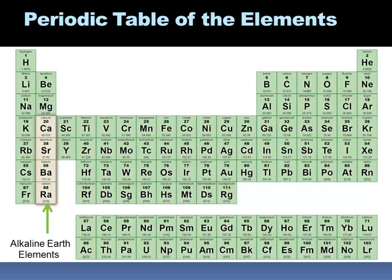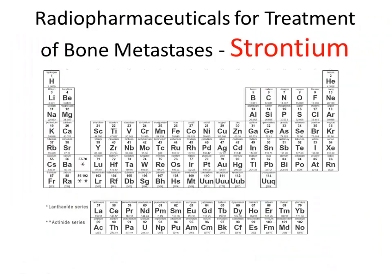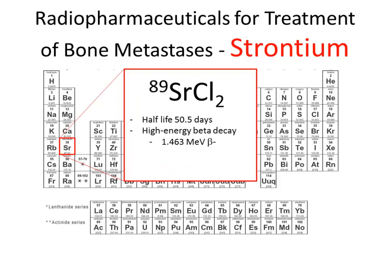Let's talk about treatment of bone metastases. We've had many elements used for treatment of bone metastatic disease, several of which occur in the alkaline earth column of the periodic table. Calcium is at the top, and the bone matrix has an affinity for calcium. These elements behave very similarly to calcium in the body. One of the first used — and used fairly extensively, including here in Kuwait — was strontium-89, administered as a dichloride salt.